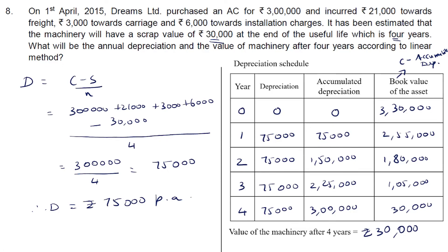A similar question was asked in last year's board paper where we had to find the value of machinery at the end of the second year, asked for two marks. I hope this video was useful for you. With this we have completed the seventh unit, financial mathematics. In my next video I will start with inferential statistics. Thank you for watching.